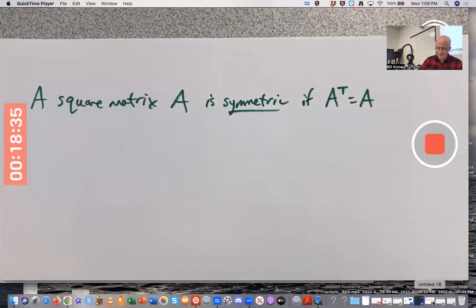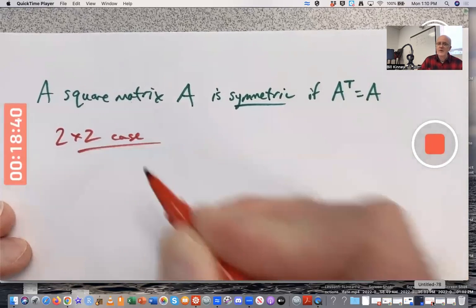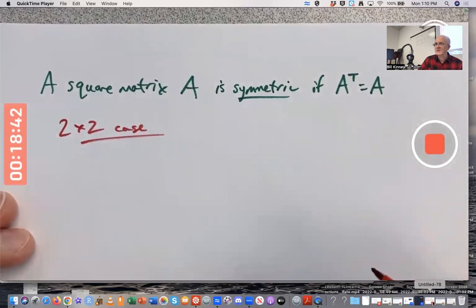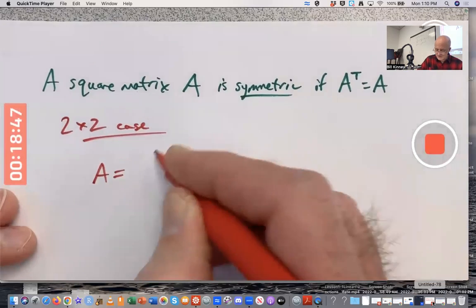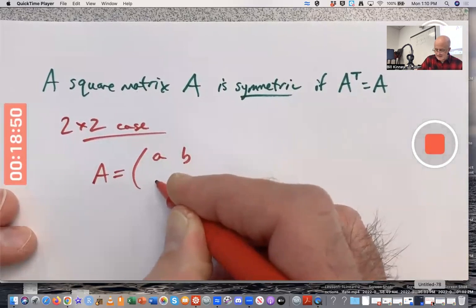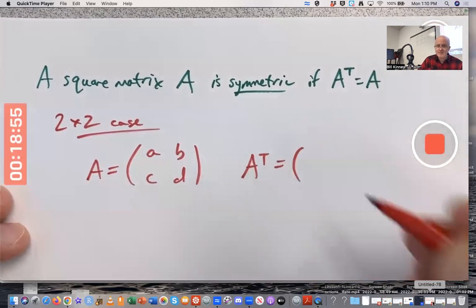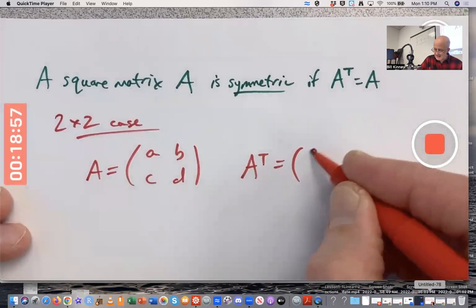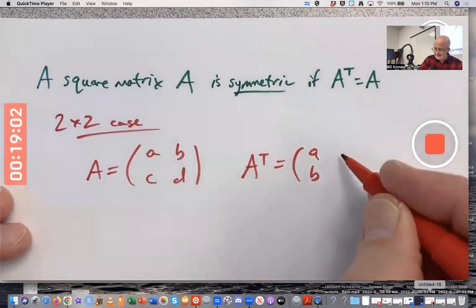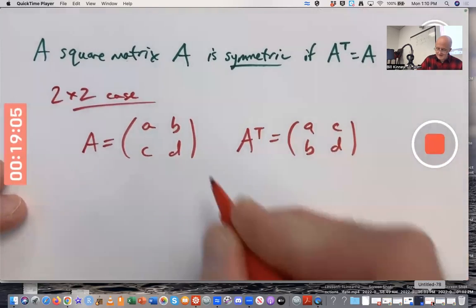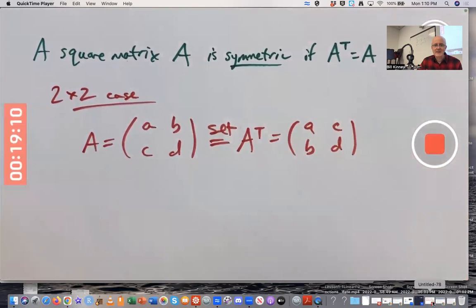So in the 2 by 2 case, what kind of matrix would A be? In the general situation where A has entries a, b, c, d, its transpose is going to be, make the first row of A the first column of A transpose, make the second row of A the second column of A transpose. If I set these equal to each other, what does that imply?